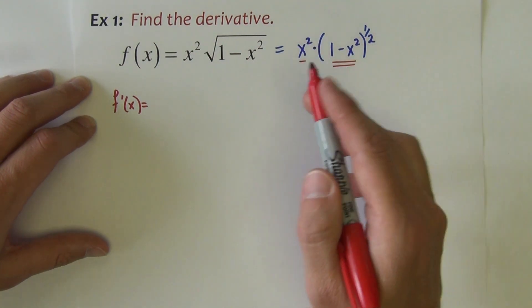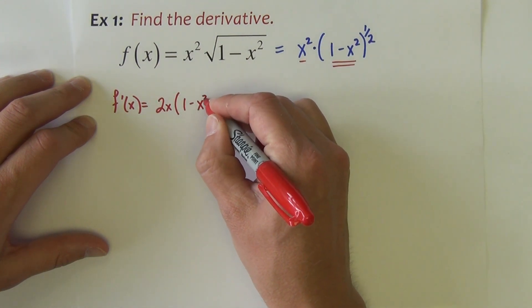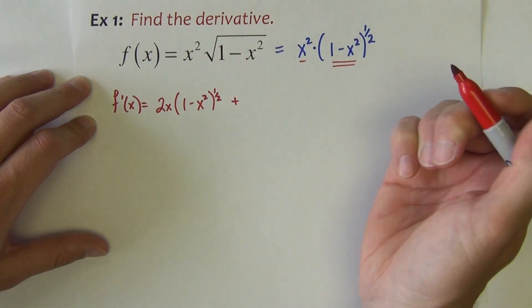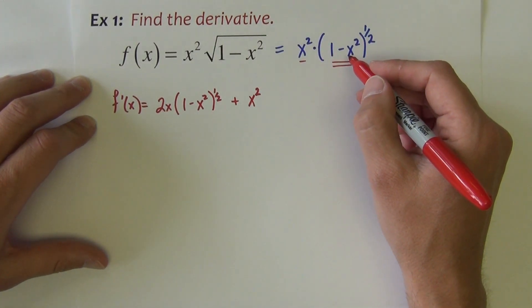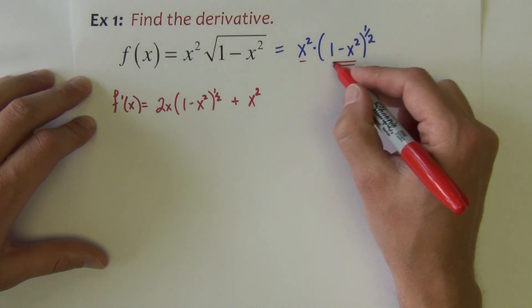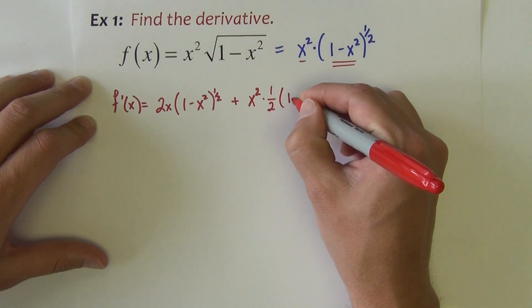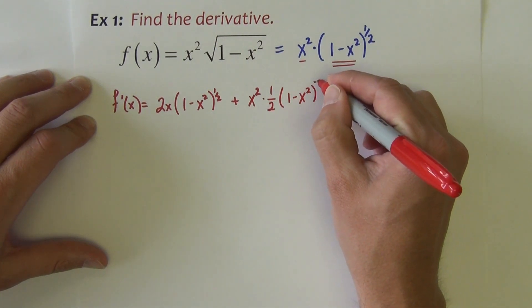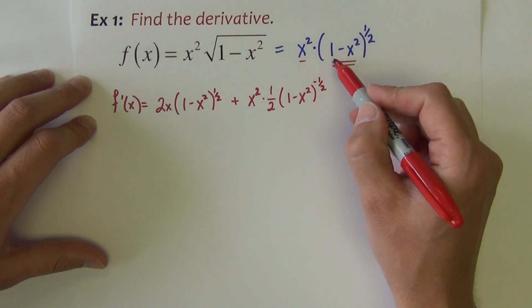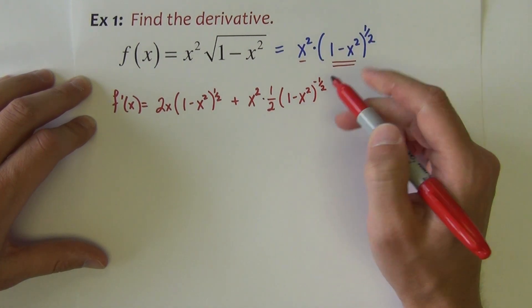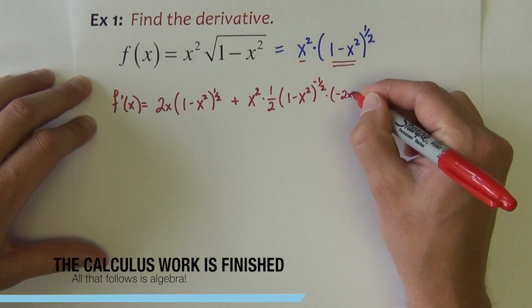Product rule says we take the derivative of the first piece — x squared's derivative is 2x — we leave the second piece, plus now we keep the first piece and take the derivative of the second piece, and that's going to be our power rule with chain rule on the inside. So power rule first: 1/2 comes out in front. The inside, 1 minus x squared, just stays 1 minus x squared, and now we multiply by the derivative of the inside, which is negative 2x.